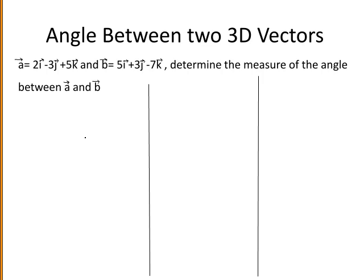This question gives vectors a and b in terms of i, j and k, so these are vectors in three-dimensional space. We're asked to determine the measure of the angle between vector a and vector b.